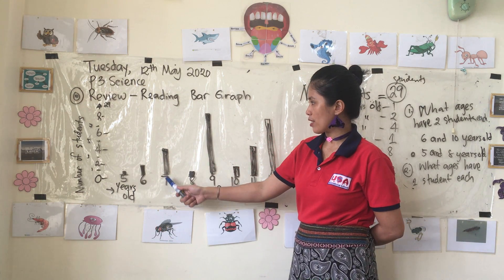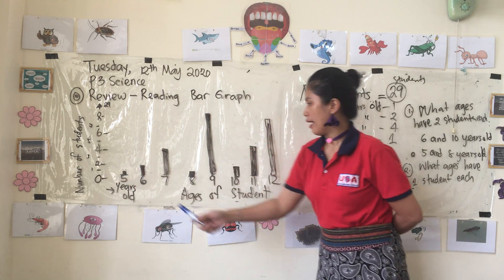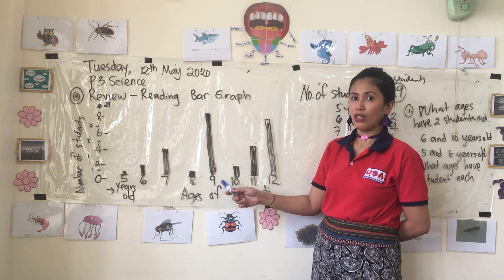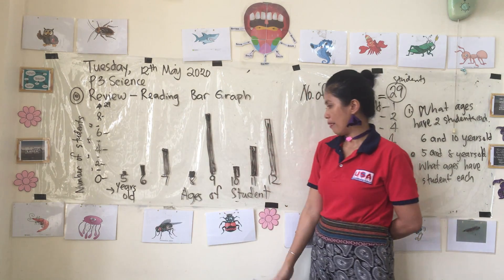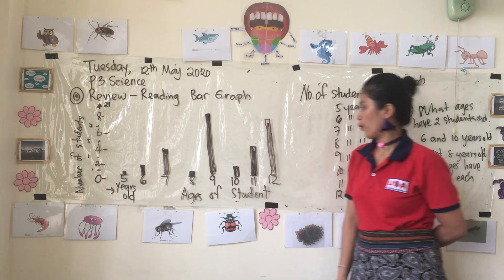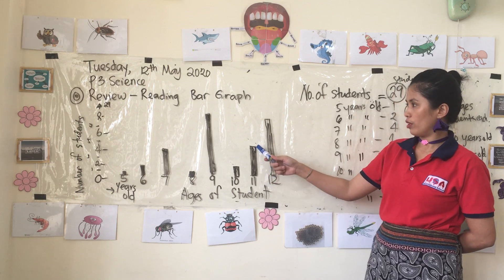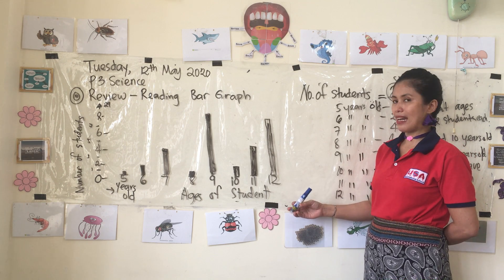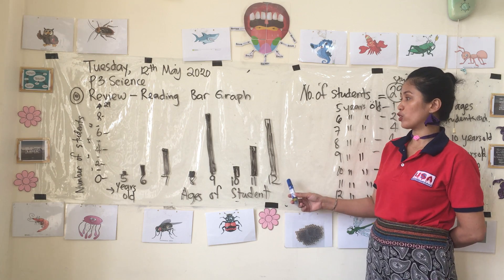How about seven years old? There are four students. How about eight years old? There is one student. How about nine years old? There are eight students. How about ten years old? There are two. How about eleven years old? There are four students. And how many students are twelve years old?